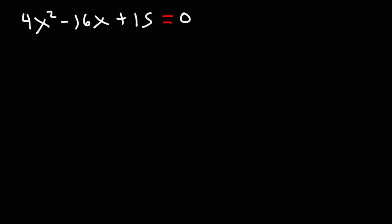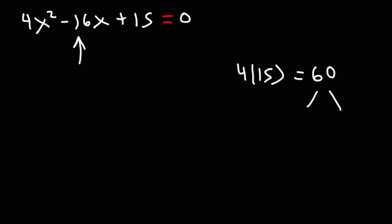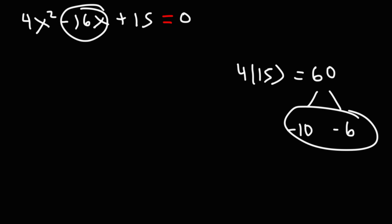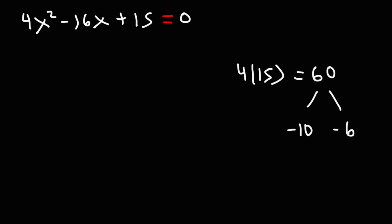To factor this trinomial, we'll use the AC method. We multiply A and C: 4 times 15 is 60. We need two numbers that multiply to 60 but add to the middle coefficient, negative 16. Those numbers are negative 10 and negative 6, since negative 10 times negative 6 equals positive 60 and they add to negative 16. We replace negative 16x with negative 10x and negative 6x. The order doesn't matter, so I'll write it as 4x squared minus 10x minus 6x plus 15.